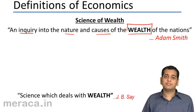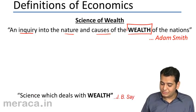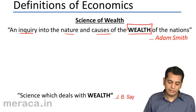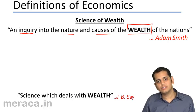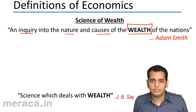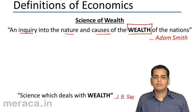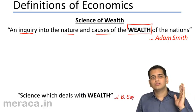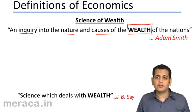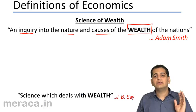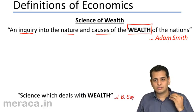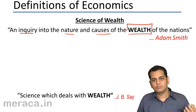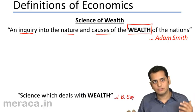The next definition was given by J.B. Say. He said a science which deals with wealth is economics. This was one of the most simple definitions. At that time economics was only one-dimensional — it was only wealth oriented.